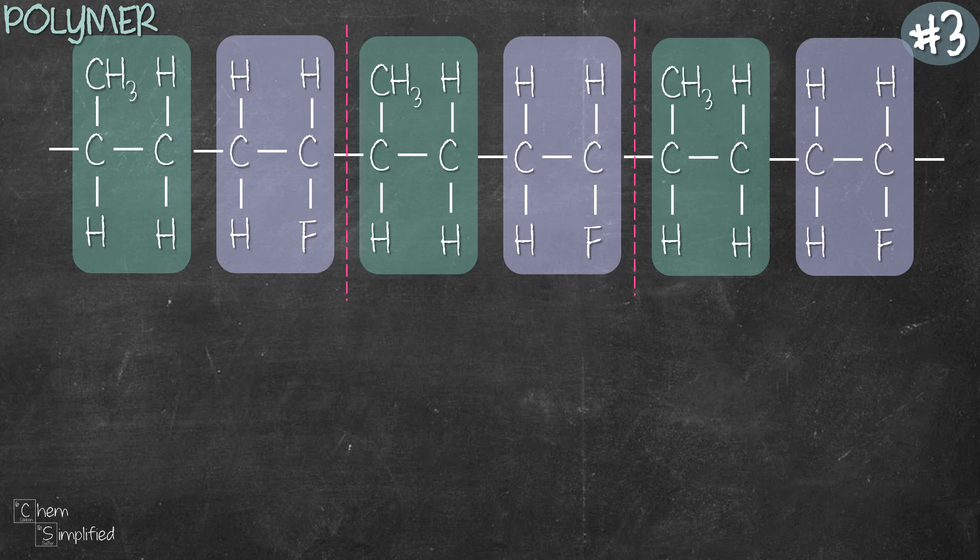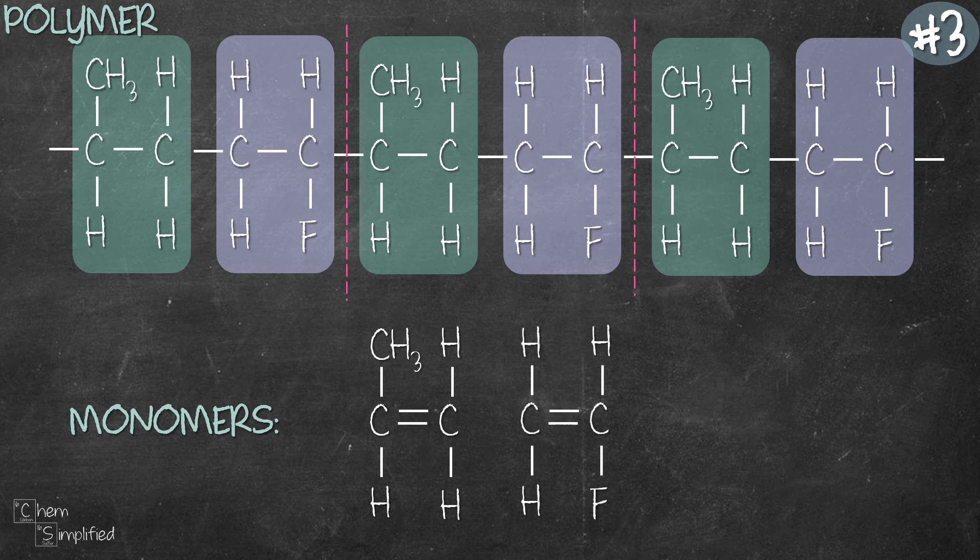Next what we have to do is copy down the repeating units, place in the double bonds. There we go. Structure of the two monomers for our final example.